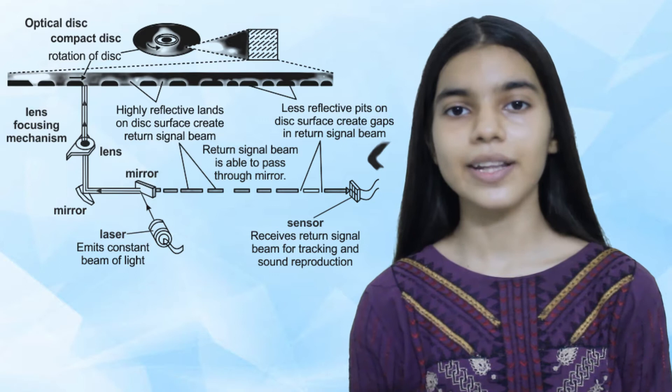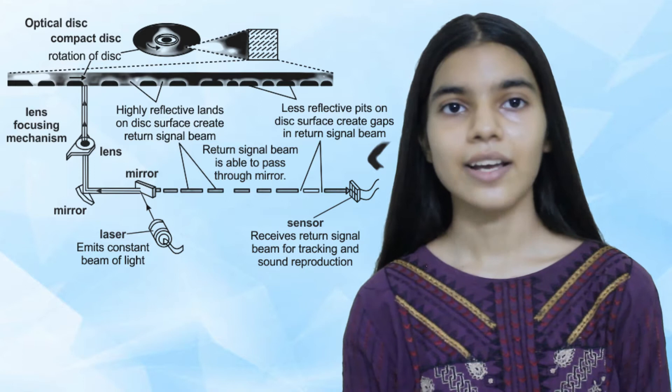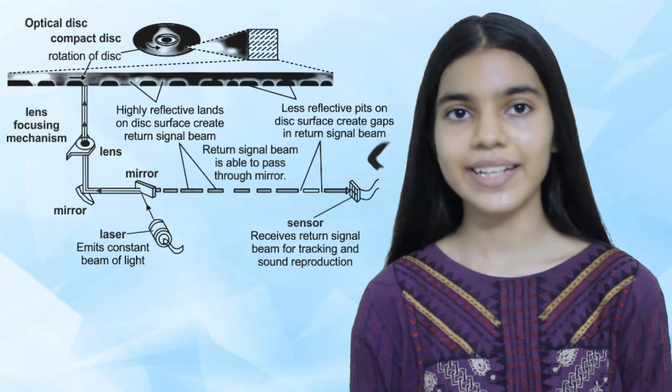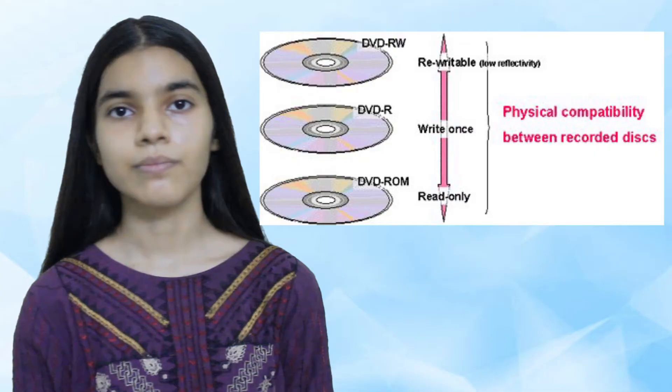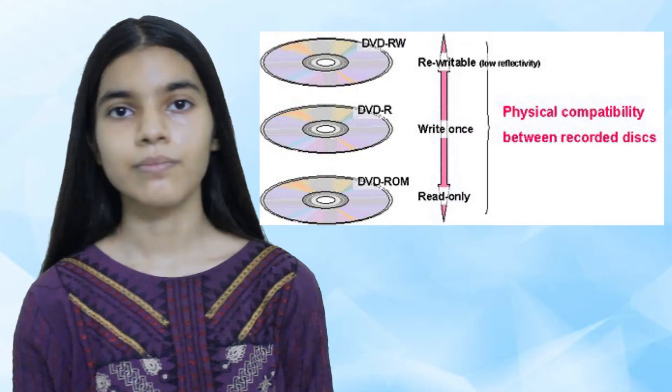Optical storage devices save data as patterns of dots that can be read using light. A laser beam is the usual light source. When the laser shines on the disk surface, lands reflect the light back, whereas pits scatter the laser beam. A sensor looks for the reflected light — reflected light from lands represents a binary 1, and no reflection from pits represents a binary 0.